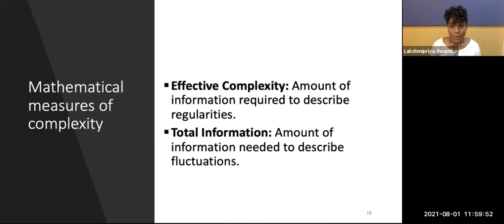I will now quantify the complexity of these trajectories by making use of information theoretic measures of complexity. I will be making use of two main measures, the effective complexity and the total information. The effective complexity measures the information needed to describe the regularities in the data of a given system. While the total information can be used to describe fluctuations in the data. Therefore, the next steps in my work are to compute these mathematical complexity measures for my data.